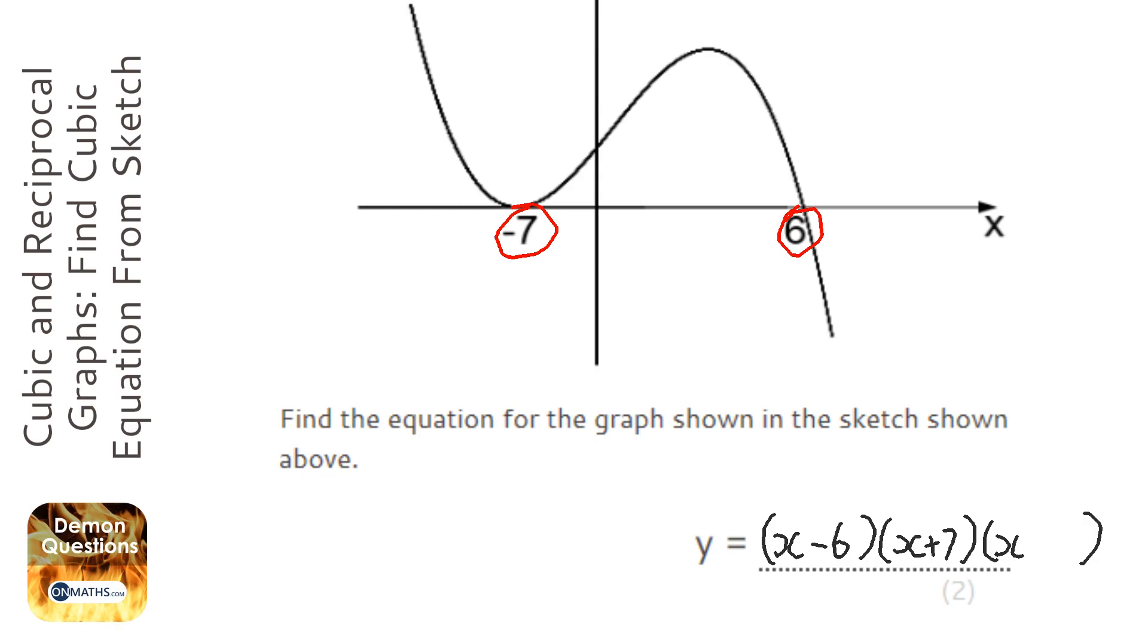But the problem we have here is we've kind of run out of solutions, and therefore the natural thing is to think, well, maybe it's a quadratic. But we can see it's not a quadratic, it is a cubic, so it needs to have three brackets, and not all cubics make three brackets, but this question will.